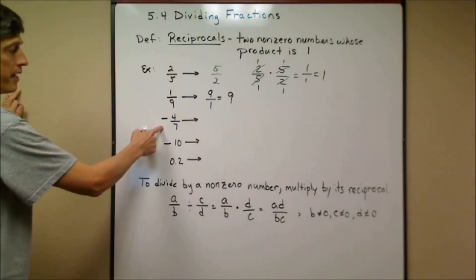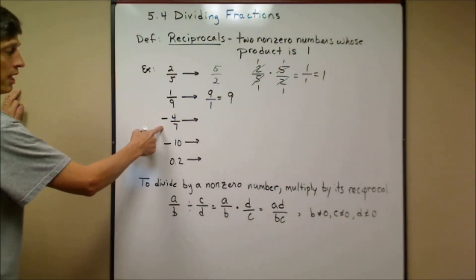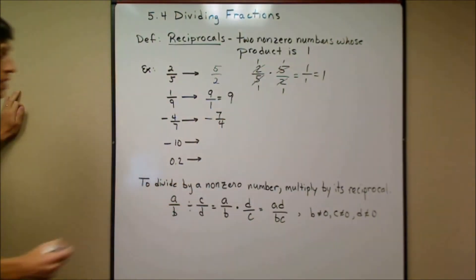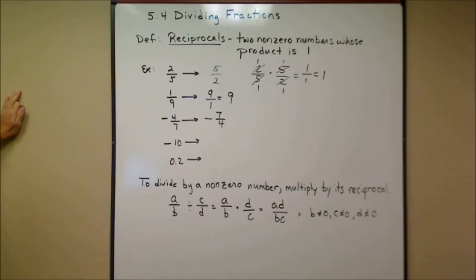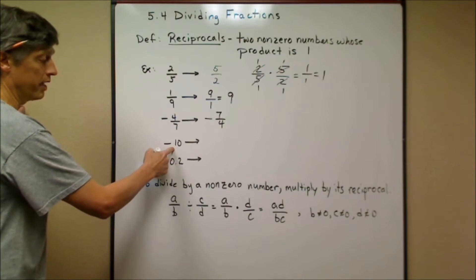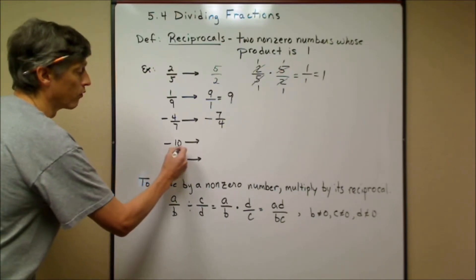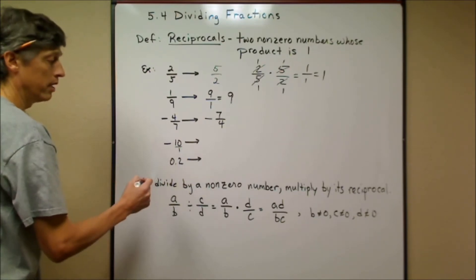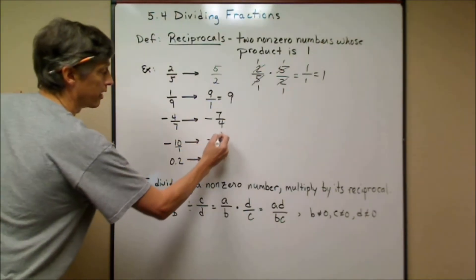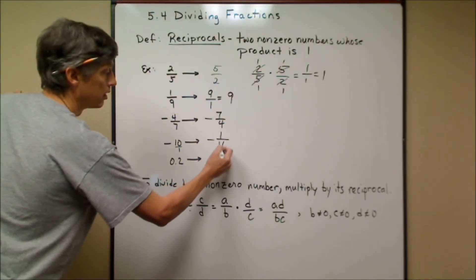The reciprocal of negative 4/7 would be negative 7/4. Notice that the sign does not change — the reciprocal of a positive is positive, and the reciprocal of a negative is negative. If it's an integer like negative 10, just put it over 1 and flip it to get negative 1/10.